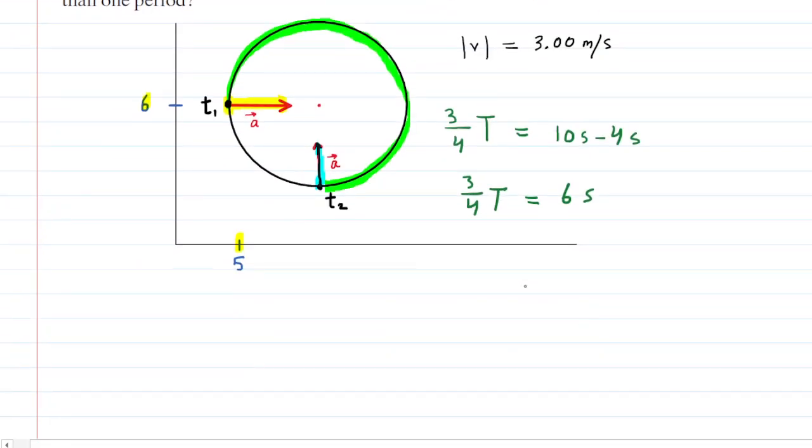So we can now easily solve for the period by multiplying both sides of our little equation here by the four-thirds so that we cancel it out on the left-hand side. So now we can see that the period is equal to eight seconds.